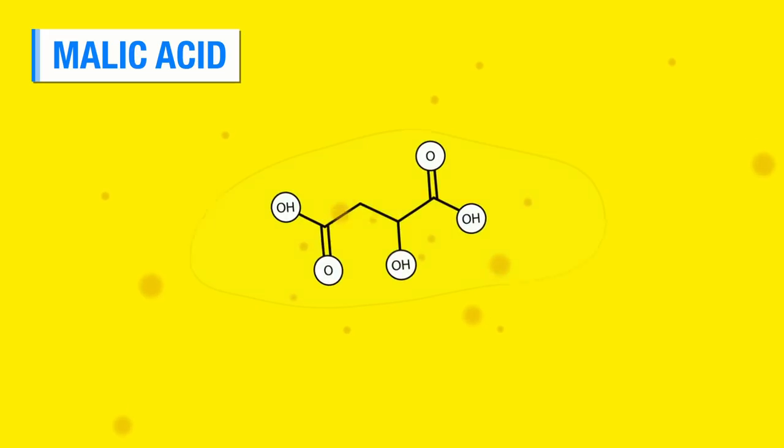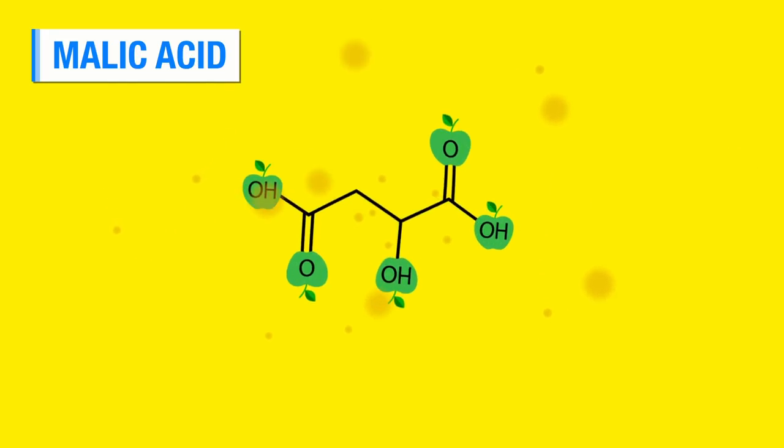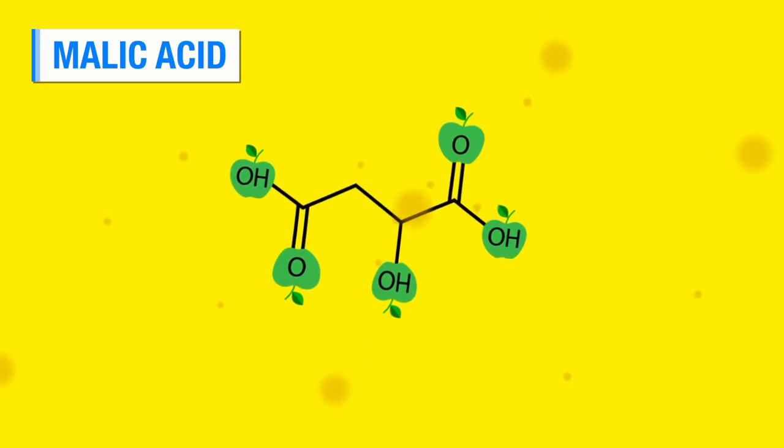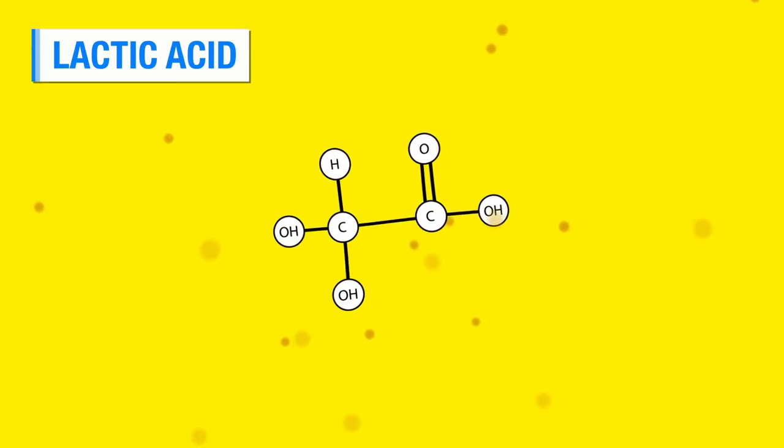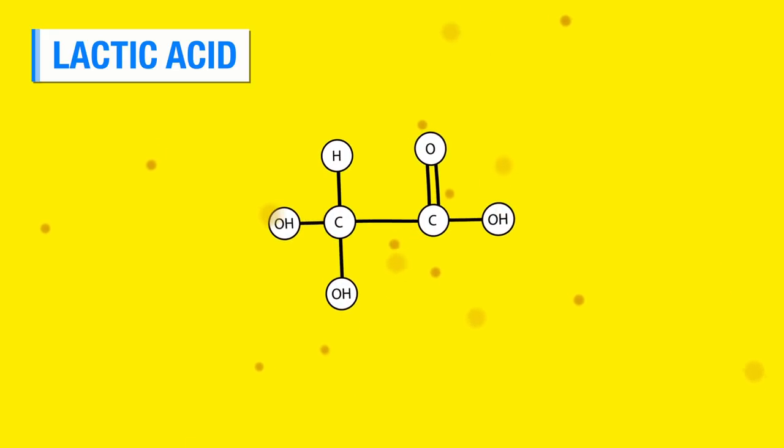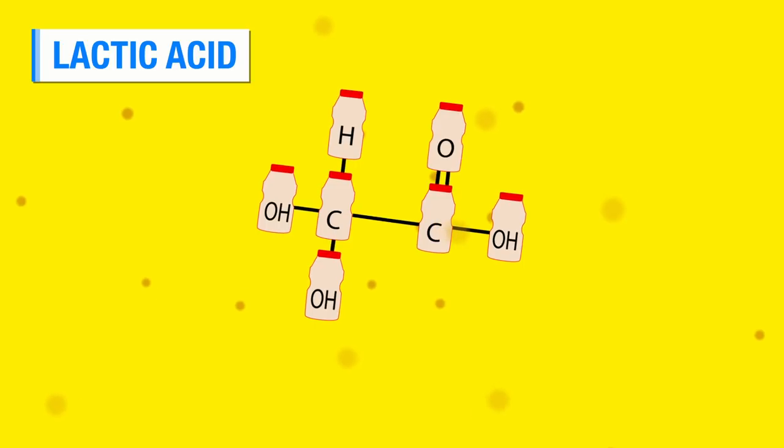Malic acid tends to be a tarter, greener type of acidity. I think of like green apple, like a Granny Smith apple is a malic acid kind of taste. Lactic acid is a softer, rounder acid. It actually is sour, but you can think of lactic acid as in like kefir or a fermented dairy product.